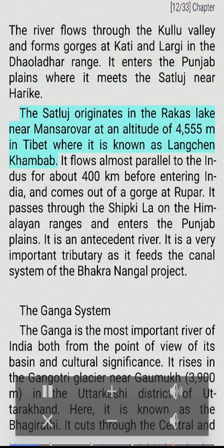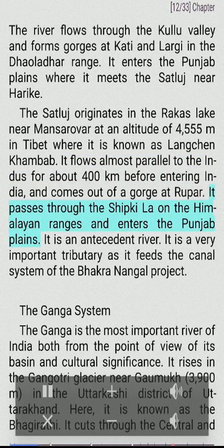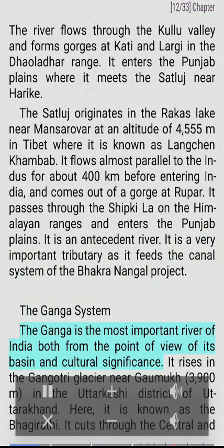The Sutlej originates in the Rakas Lake near Mansarovar at an altitude of 4,555 meters in Tibet, where it is known as Langchen Khamban. It flows almost parallel to the Indus for about 400 km before entering India and comes out of a gorge at Rupar. It passes through the Shipki La on the Himalayan ranges and enters the Punjab plains. It is an antecedent river and a very important tributary as it feeds the canal system of the Bhakra Nangal project.